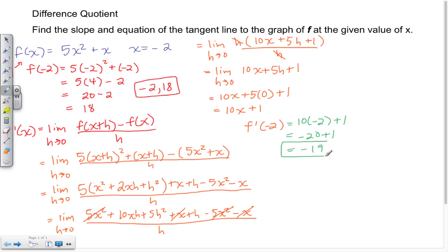10 times negative 2 gives me negative 20 plus 1. Negative 20 plus 1 gives me a negative 19. So here I see the actual slope value is negative 19.